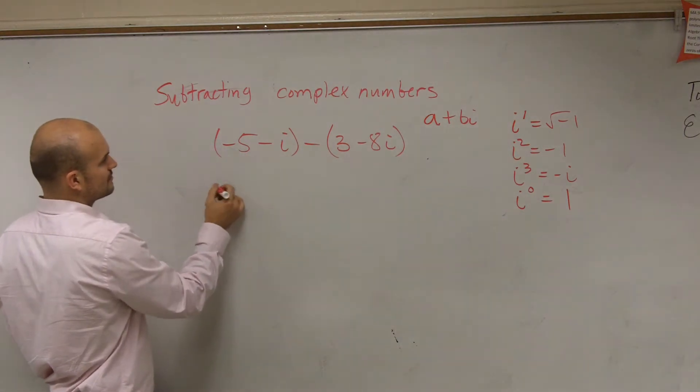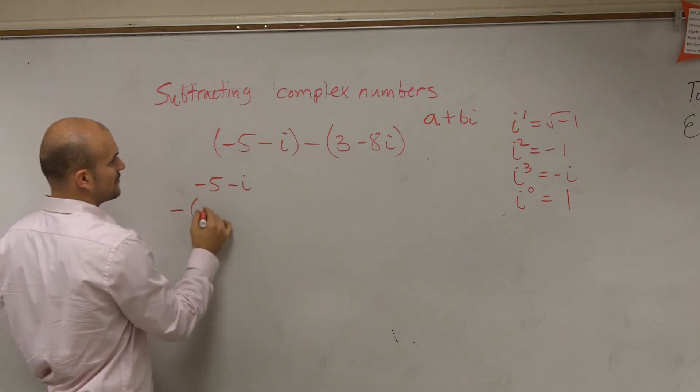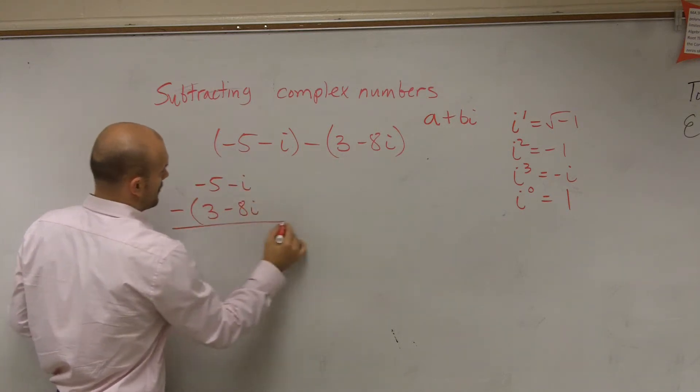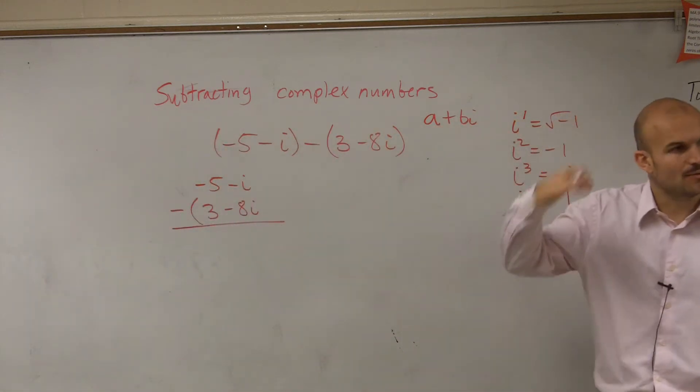So all I'm going to do is write negative 5 minus i minus 3 minus 8i, right? You guys remember the good old subtraction bar and you just put one on top of the other.